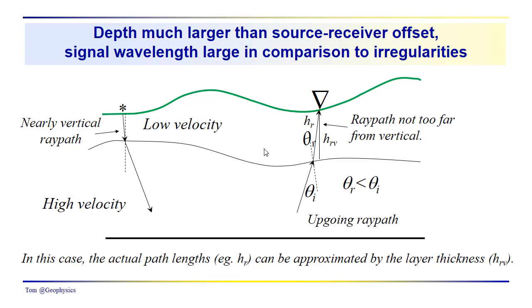And we can make this assumption, the assumption that the LVL, that the outgoing ray path through the LVL is nearly vertical. We can do this if we're thinking about seismic wavelengths that are fairly large compared to the irregularities on the bedrock interface. Then we can make this assumption, then it should be a valid assumption.